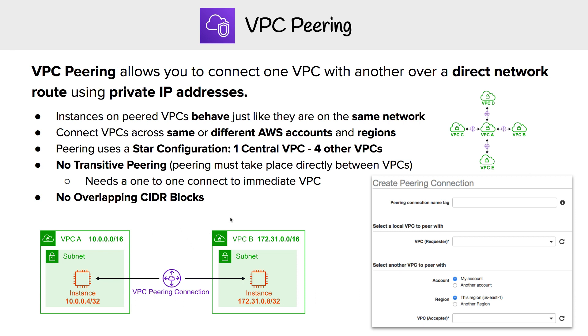It's very simple to create a peering connection — we just give it a name, we specify the requester, which can be VPC A, and then the acceptor, which could be VPC B.